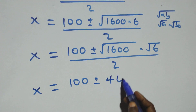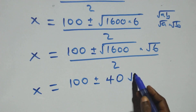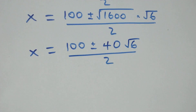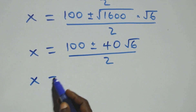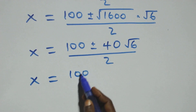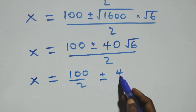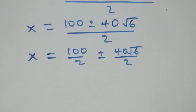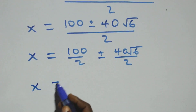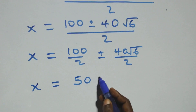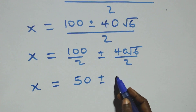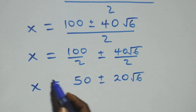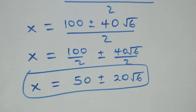We separate this and have x equals to 100 over 2, plus or minus 40 root 6 over 2. This gives us x equals to 50 plus or minus 20 root 6. We therefore have two possible values of x.